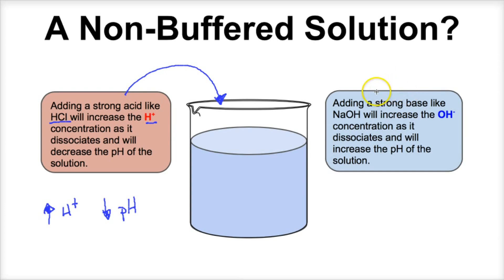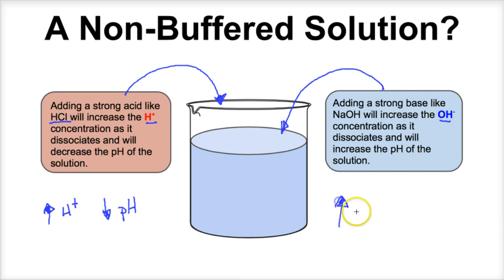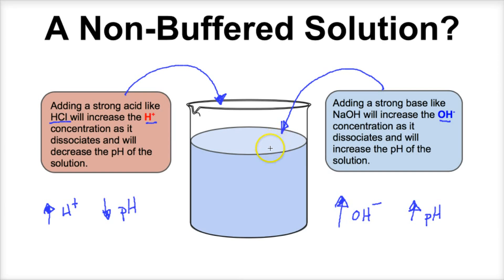Conversely, what if we add a strong base like sodium hydroxide to this solution? NaOH is going to dissociate and there are going to be some free-floating hydroxide ions in this solution. If we increase the hydroxide ion concentration, we will also be increasing the pH of this solution. So in a non-buffered solution, by adding strong acids or strong bases, we can cause a drastic fluctuation or change in the pH of this aqueous solution.